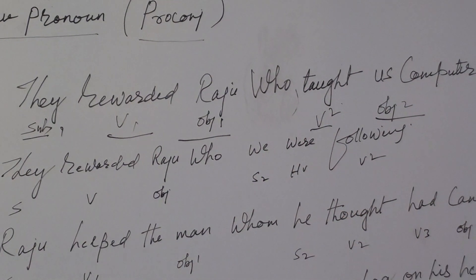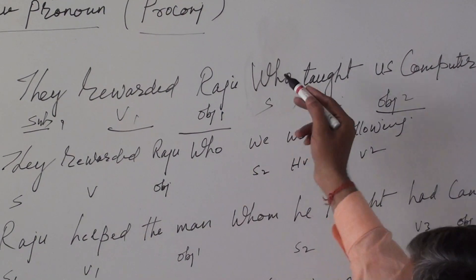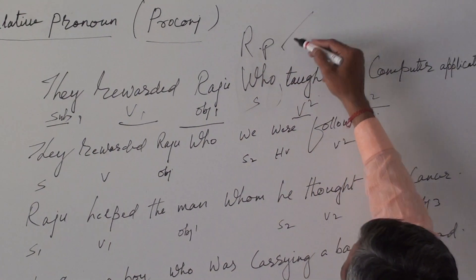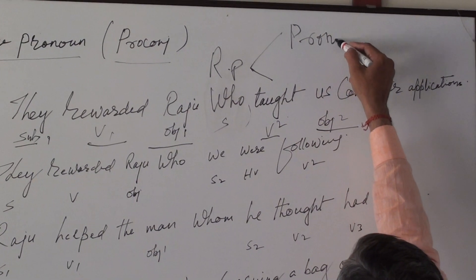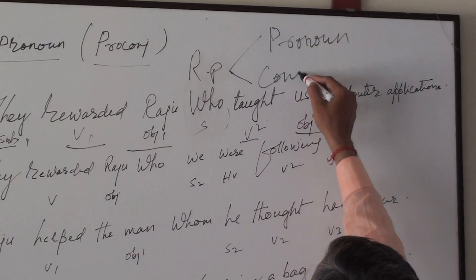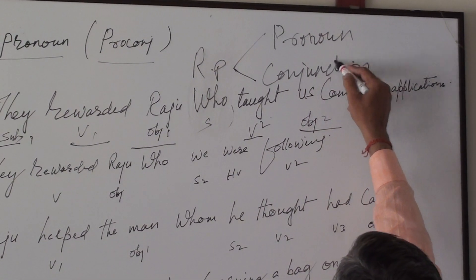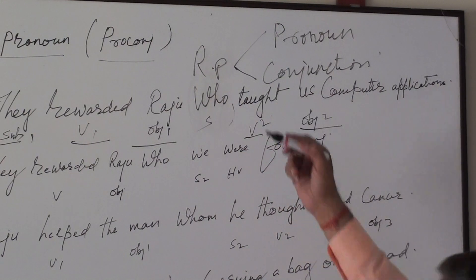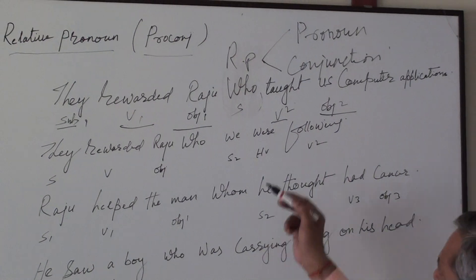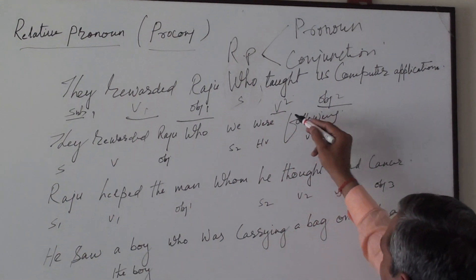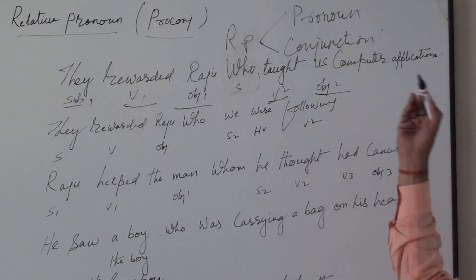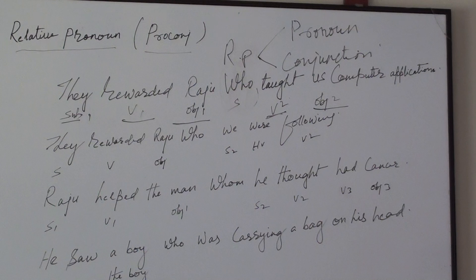I told you that this relative pronoun acts as a pronoun and also acts as a conjunction. When it acts as a pronoun, it can be a subject or an object. Here it is working as the subject of this verb. So 'who' should be there. Now come to the second sentence.